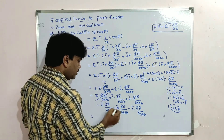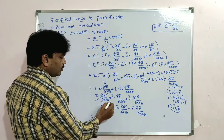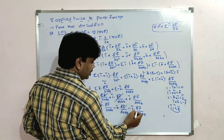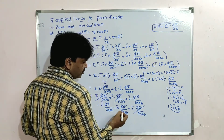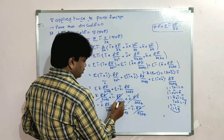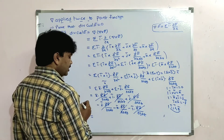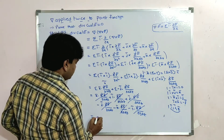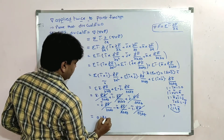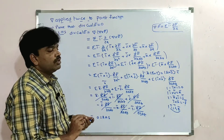The k̅ dot (∂²F̄/∂x∂y) terms cancel, the i̅ dot (∂²F̄/∂y∂z) terms cancel, and the j̅ dot (∂²F̄/∂x∂z) terms cancel. So finally we get zero, which equals RHS.